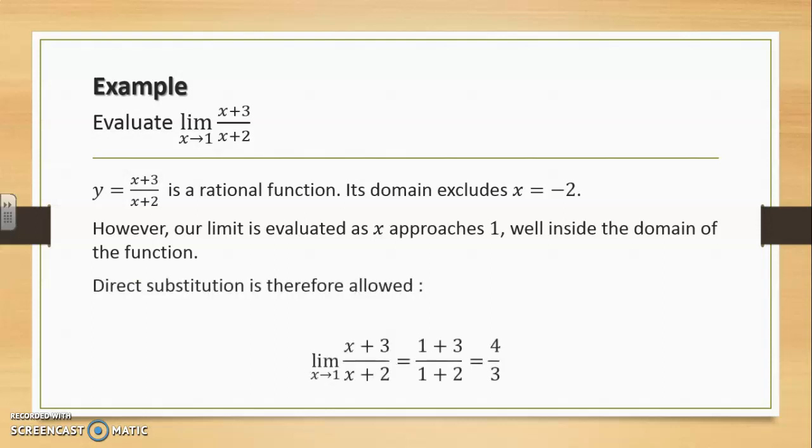So once again, direct substitution is allowed, and to compute the limit as x approaches 1 for the rational function x plus 3 over x plus 2, we can simply replace x values by 1, which would produce a result of 4 over 3. Graphically, this means that for x values that approach 1, the y value of the rational function is approaching 4 over 3.